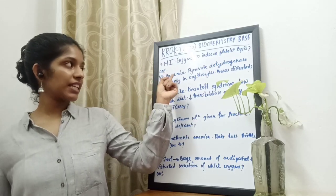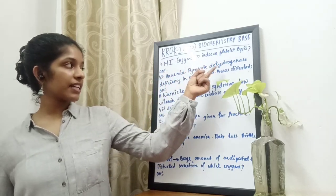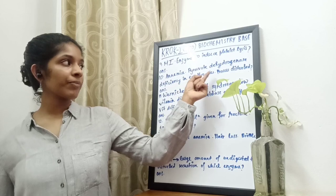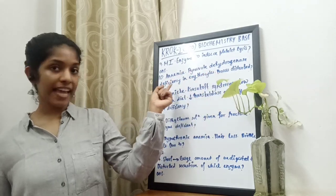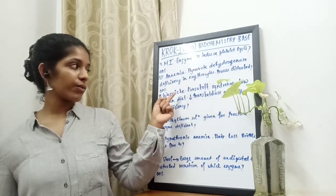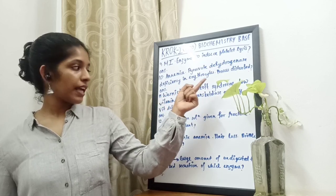The next question: the patient has anemia. Pyruvate kinase deficiency is seen in the erythrocytes. The process that is disturbed is anaerobic glycolysis.